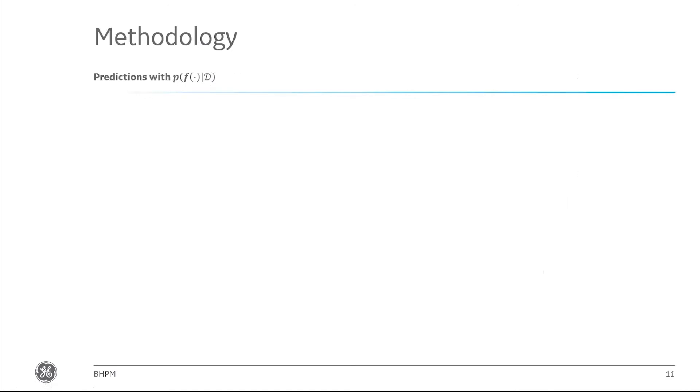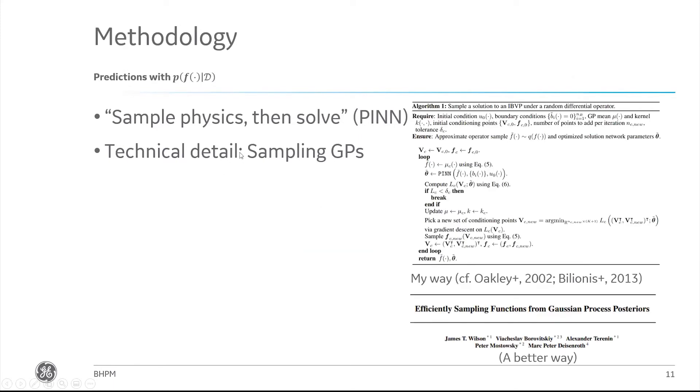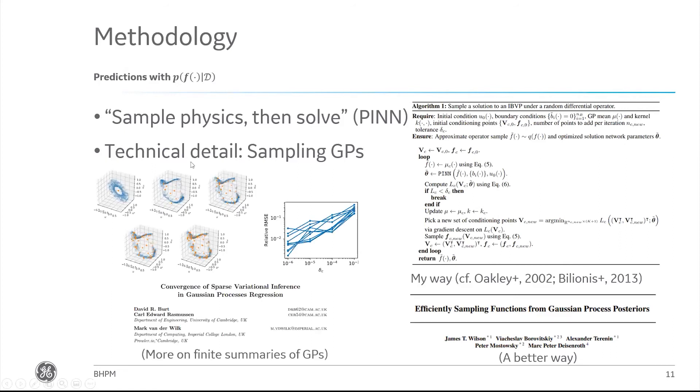Once you've gotten that posterior, it's possible to build a simulator around it. It's basically a physics-informed neural network where the physics that are informing it are a sample of the posterior from the Gaussian process. There are technical details related to this sampling which I'm not going to go into in this talk, but in that paper I showed at the beginning, there's more details.